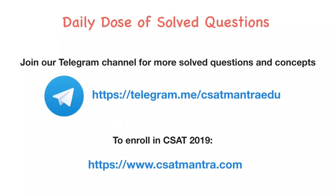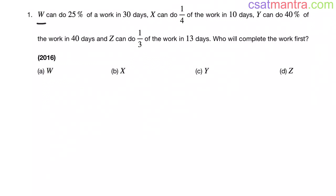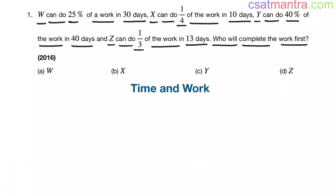W can do 25% of a work in 30 days. X can do 1/4th of the work in 10 days. Y can do 40% of the work in 40 days. Z can do 1/3rd of the work in 13 days. Who will complete the work first? This question is from time and work chapter, asked in 2016. Very easy question my friends.